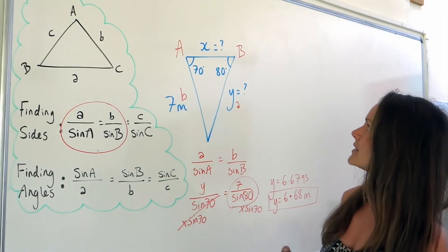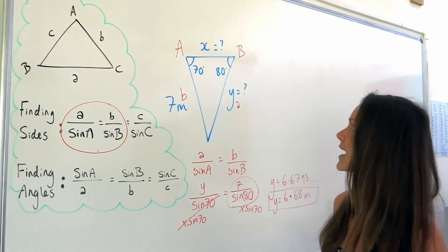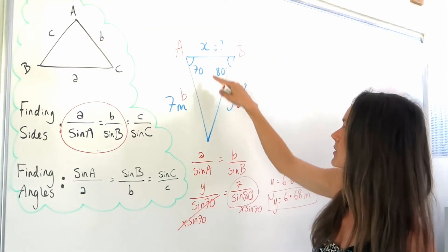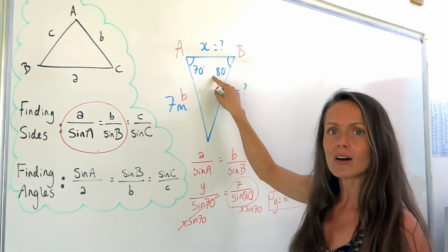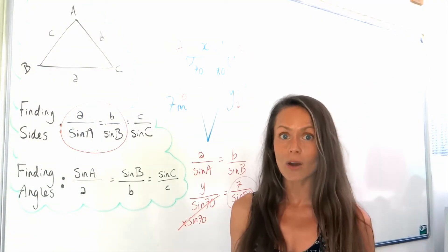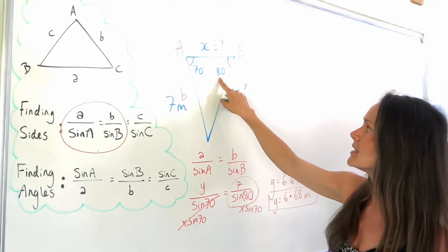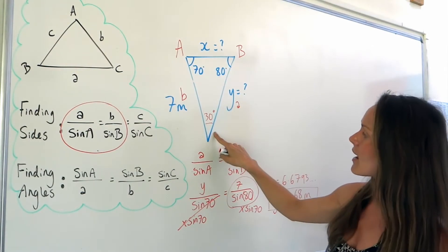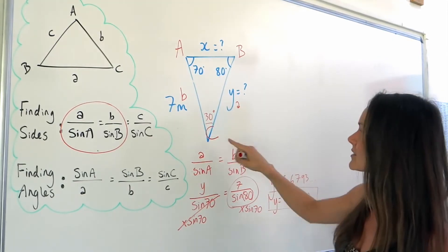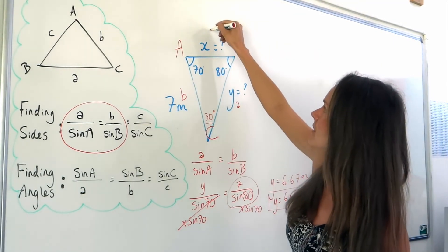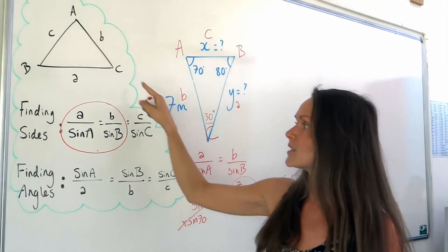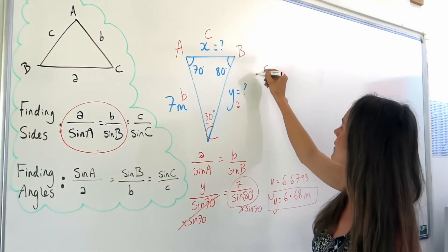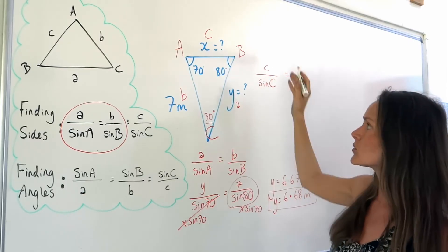Now we're going to work out side X at the top. Before I can work out this side, I must know the angle opposite it. I know the other two angles, and all angles in a triangle add up to 180 degrees. So 70 plus 80 is 150, which means that angle must be 30. I'll label that angle C, so this is side C up here. We're finding a side again, so we use the sides-on-top version: side C over sine of angle C.